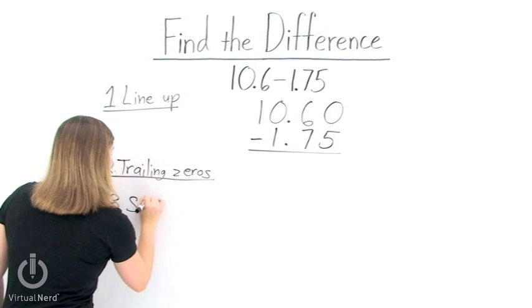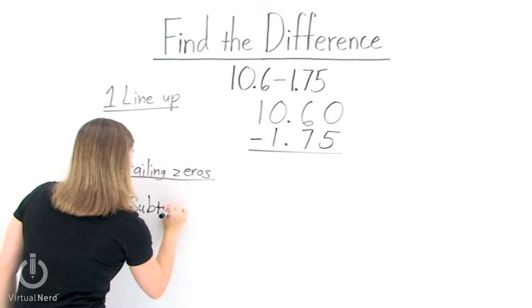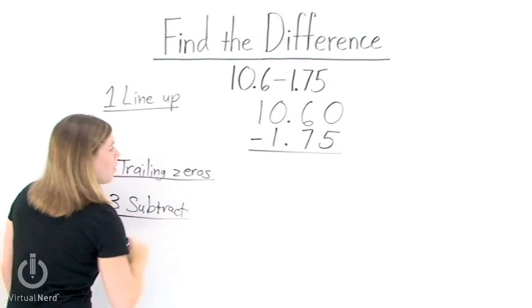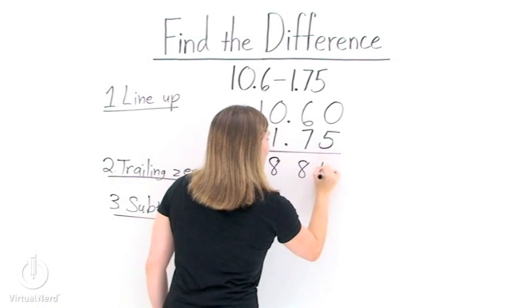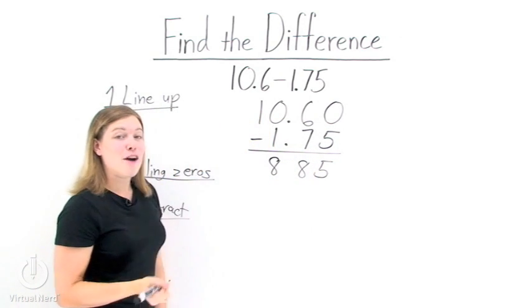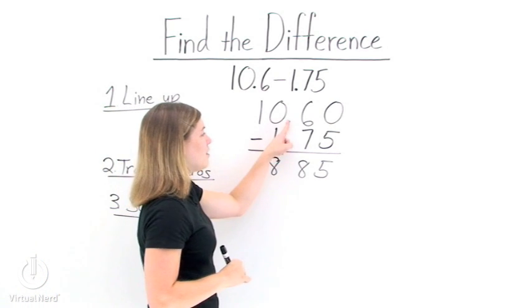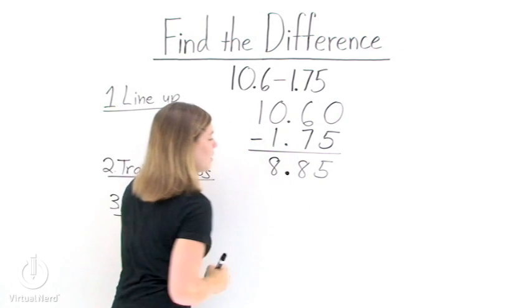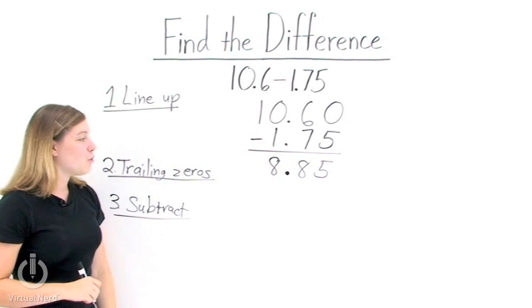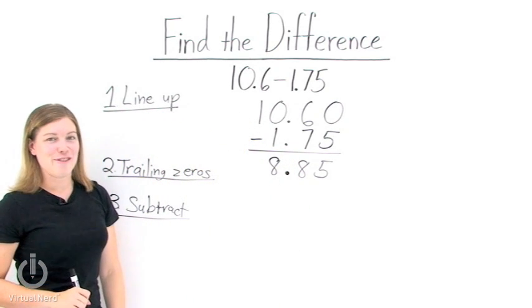Step number three is just to subtract as we normally would. When we do this to our problem, we get an answer of 8, 8, and 5. Now for the decimal. To put the decimal in our answer, simply follow the line of decimals and put our decimal in our answer in the same spot. So we get an answer of 8.85.